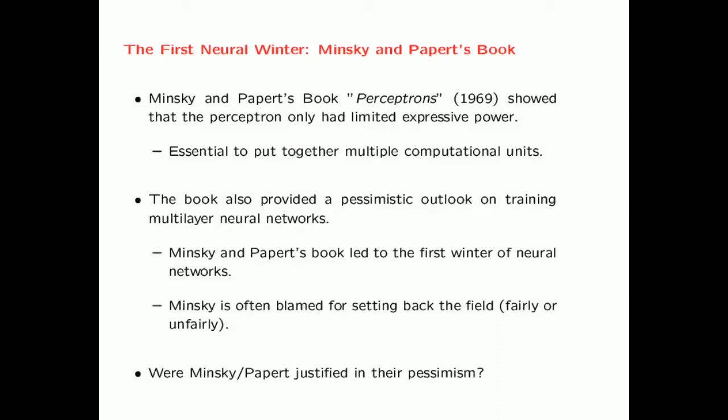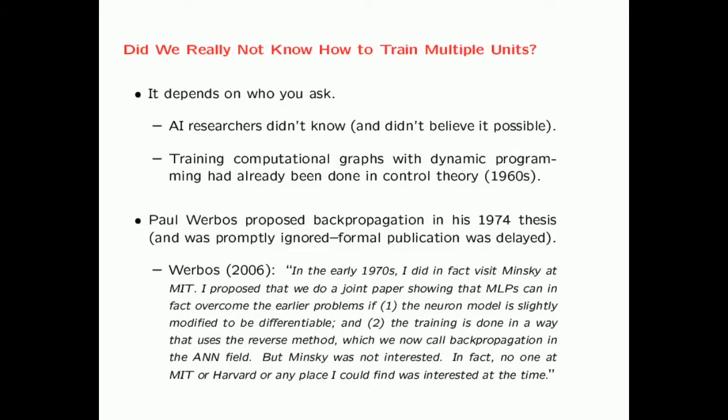One question that arises is whether Minsky and Papert were justified in their pessimism. Did we really not know how to train multiple units at the time their book came out? The answer depends on who you ask. AI researchers truly didn't know — in fact, they didn't believe it was even possible. However, training computational graphs with dynamic programming had already been done in control theory in the 1960s. In fact, the backpropagation algorithm that we know today is nothing but a simple application of dynamic programming.